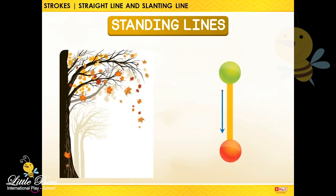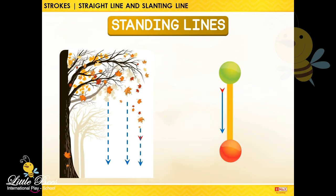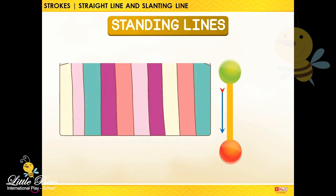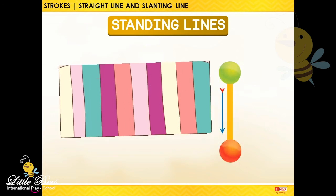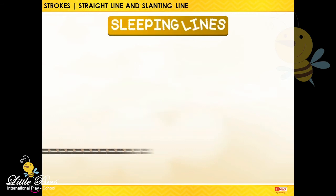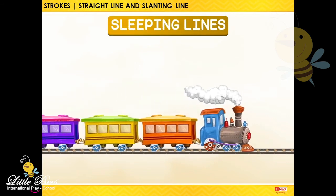The leaves falling from the tree are forming standing lines. Look at the pattern on this wall. Can you see the standing lines? Can you see the railway track is in the form of a standing line?